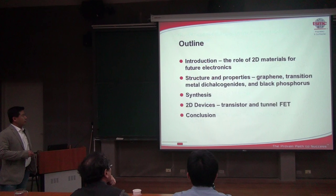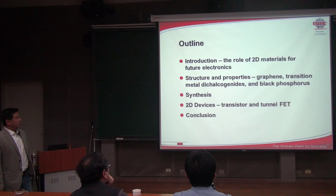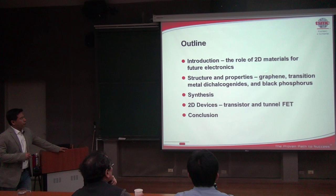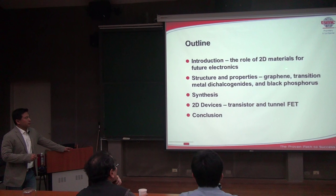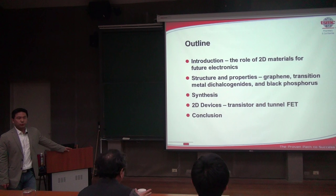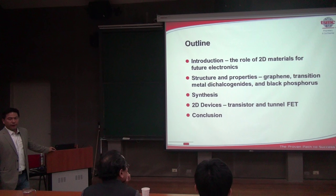This is the outline of today's presentation. I will quickly go through the introduction to give an idea of what 2D can do for us for future electronics. We will spend a couple of slides on lattice structure and band structure, as well as their properties. I will focus on three materials: graphene, transition metal dichalcogenides, and more recently, black phosphorus materials. I'll cover their synthesis routes and the possibility of scaling up for industrial applications. I will also talk about 2D devices, transistors, and the application with tunnel FETs, where 2D materials may have some advantage over conventional 3D materials.